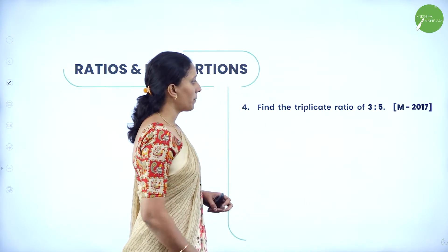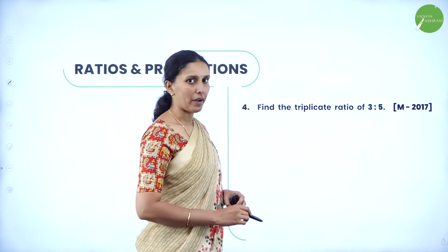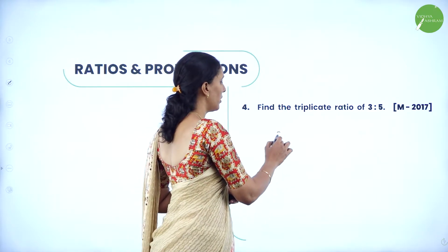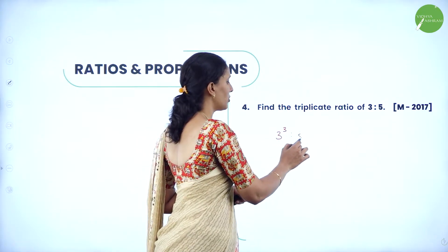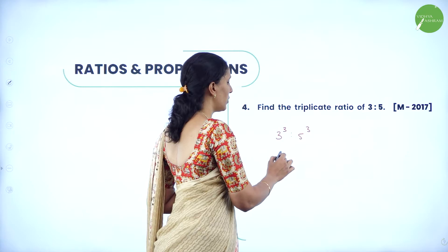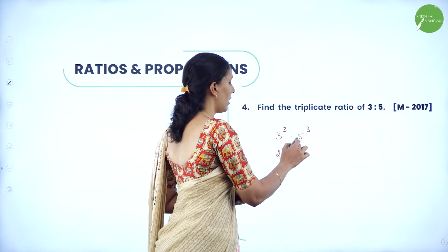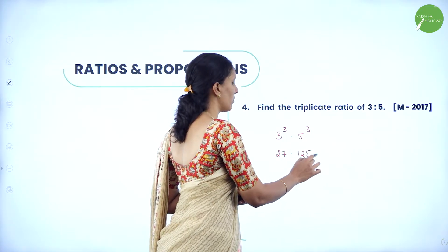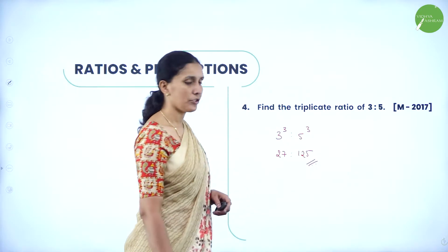Find the triplicate ratio of 3 is to 5. When we say triplicate ratio, you need to cube the ratios on both sides. So 3 cubed is 27 and 5 cubed is 125. Therefore, the triplicate ratio is 27 is to 125.